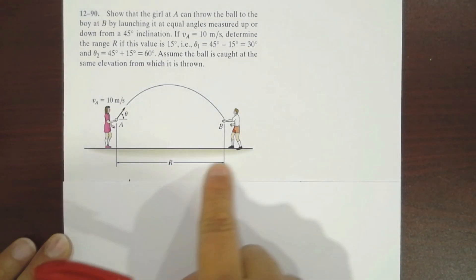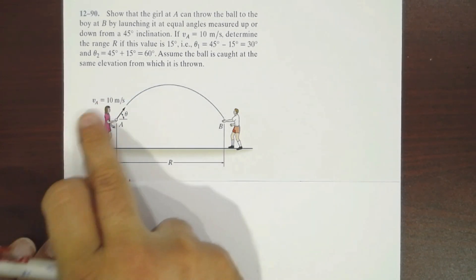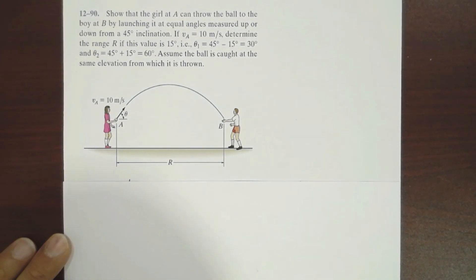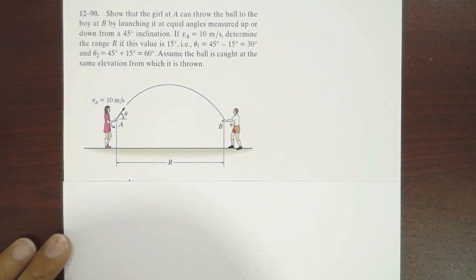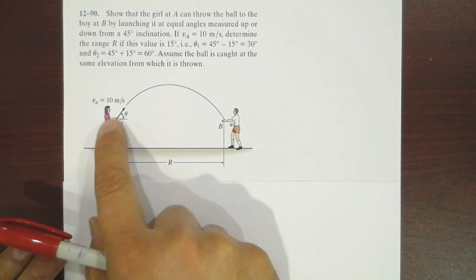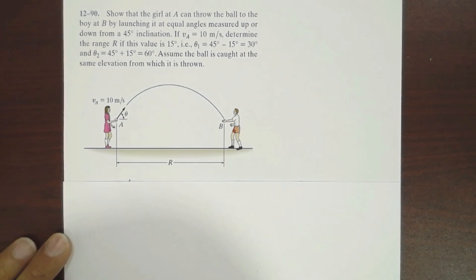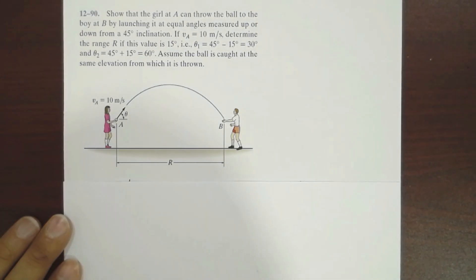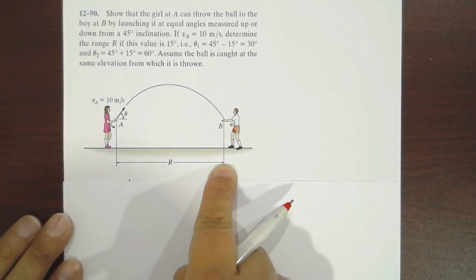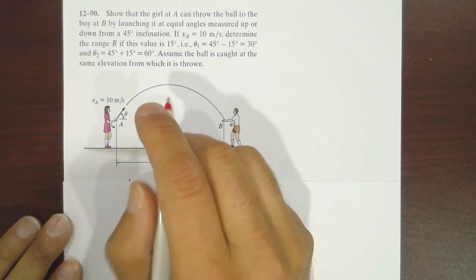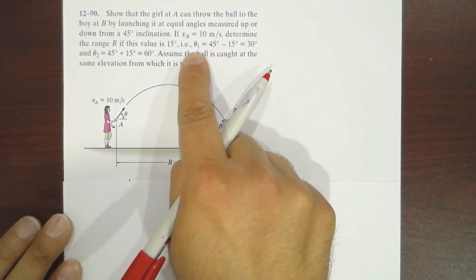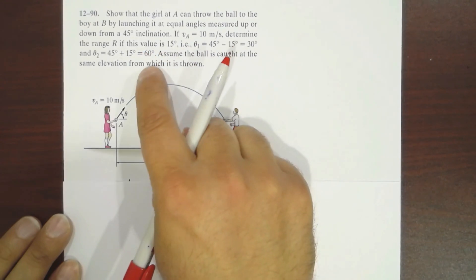This is the range — the X component of the displacement of this projectile. As stated in the question, the ball is thrown and caught at the same elevation, implying that Y is the same. If we place the origin at point A, Y would equal zero, meaning Y_A equals Y_B equals zero. In this question, it is required to prove that the range is the same for both angles, 30 degrees and 60 degrees.